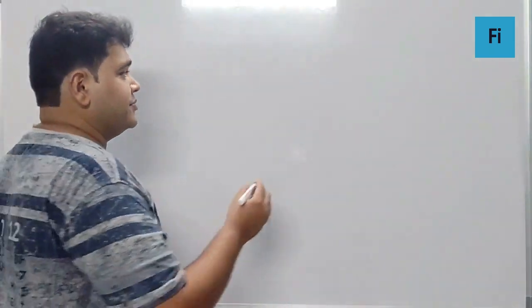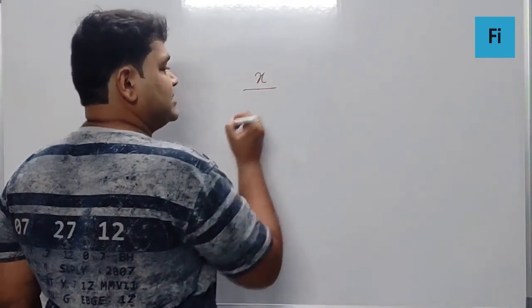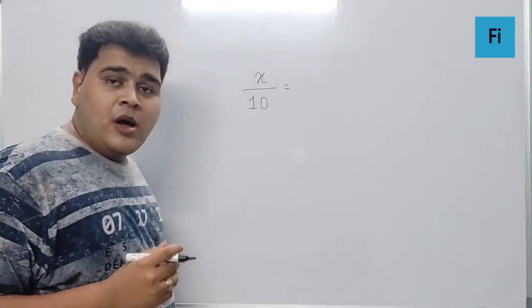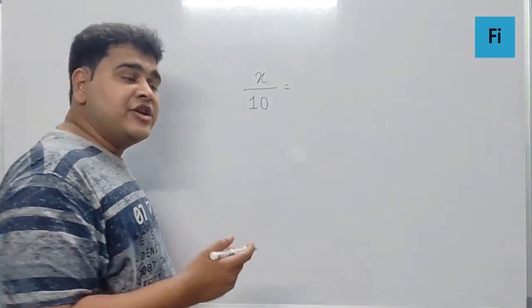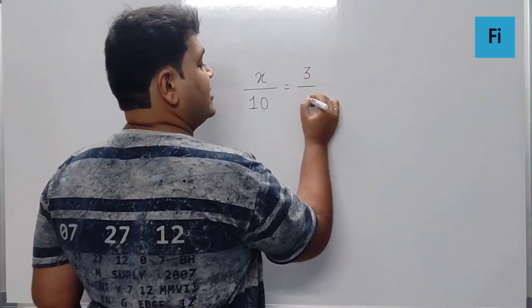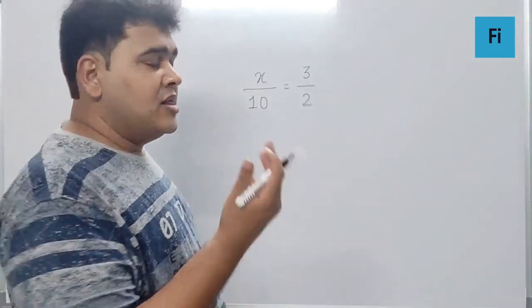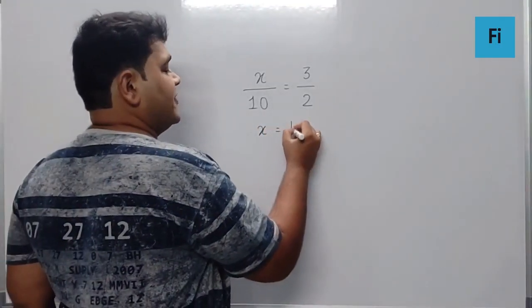Now guys, this is a tricky sum. They have given the X resistance in the left gap and a 10 ohm resistance in the right gap. By balancing this, the ratio of the length of the bridge wire is 3 is to 2. Now if you solve this, you get the value of X as 15 ohm.